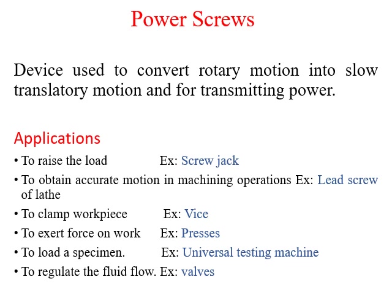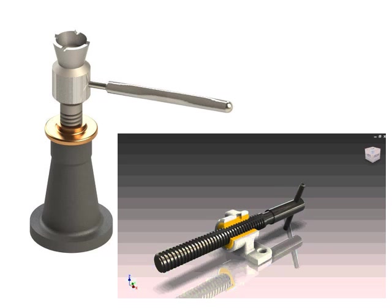Pressing devices use power screws to load the specimen, as seen in universal testing machines — this is also a type of power screw. Power screws are also used to regulate fluid flow in valves. A figure shows the screw jack used to lift loads, especially in automobiles.